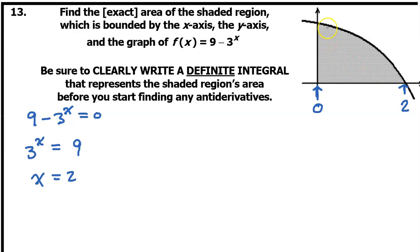The area between a curve and the x-axis is the integral from the first x value to the last x value. So we can write an expression for this area as the integral of this function, 9 minus 3 to the x power dx from 0 to 2.